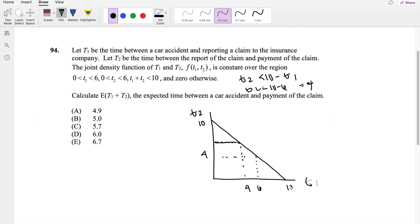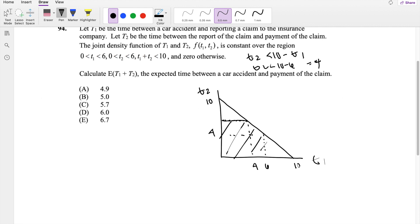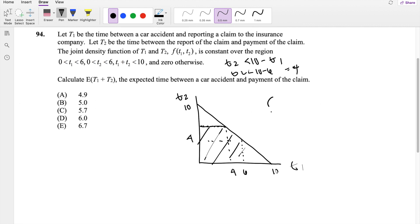So essentially we're looking at this area right here. And we know for the probability distribution function of f(t1, t2), if they're constant, to be equal to the 1 over the area. Right? So then what is the area of this?